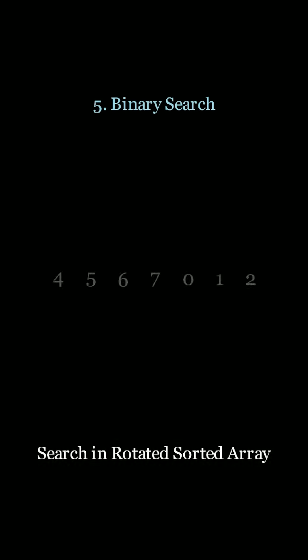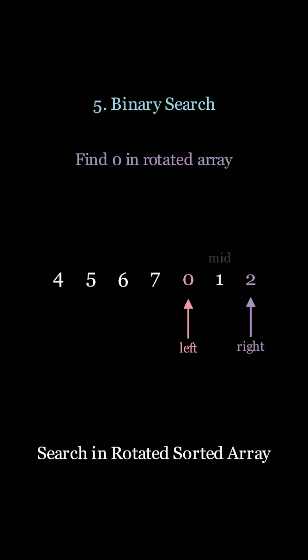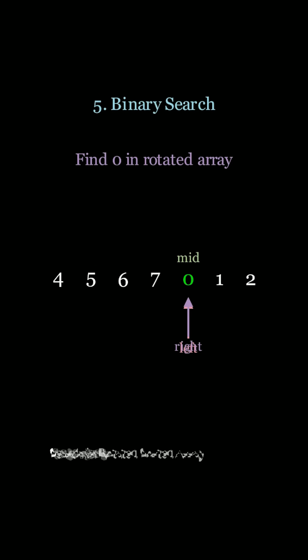There's also another use case when you want to search in a rotated sorted array. So we have 4, 5, 6, 7, and 0, 1, 2. In this case, once again, you need to be very clever with how you compare the left, right, and mid pointers until you arrive at an answer.